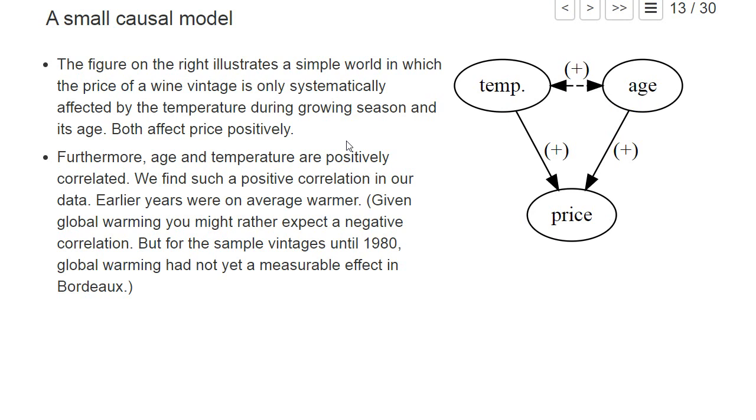Let us try to explain this with a simplified model illustrated with this graphic. Assume that the price of an auction bottle of Bordeaux wine only depends on two variables: the temperature during the growing season when it was created and the age of the bottle.